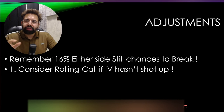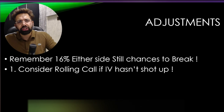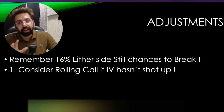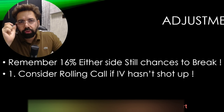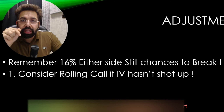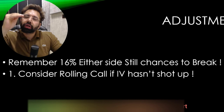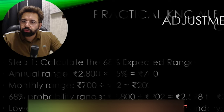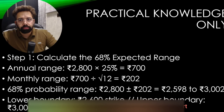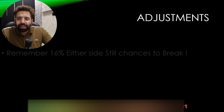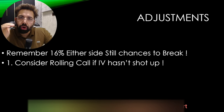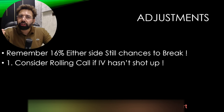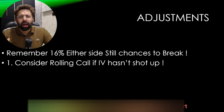Number one: consider rolling the call if IV hasn't shot up. For example, Reliance IV is at 25 and the stock has gone up but IV still remains around 25 to 23. Then what we can do is roll the call option up. We sold the 3000 call option. If the market goes up to 3000 but IV hasn't gone up, we can roll. We are just not rolling when IV is going up — that would be a suicidal move. This is a game-changer point you must note.